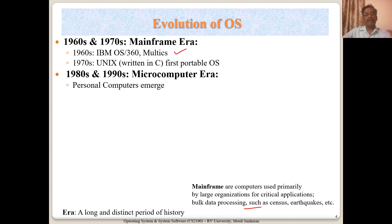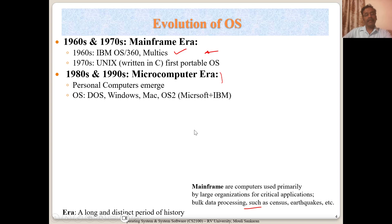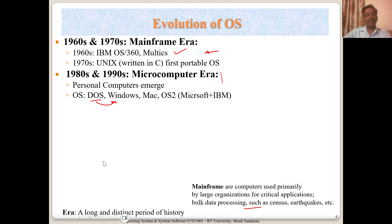Then came the 1980s and 90s, where the microcomputer era started and personal computers emerged. Earlier, computers were only available at the organization level, not at an individual level. In the 1980s, each one of us started owning computers — personal computers, or PCs. Different operating systems also evolved during that time, including the Disk Operating System from Microsoft. Then came Windows, whose main difference from DOS was its focus on graphics-based user interfaces, which became very popular.